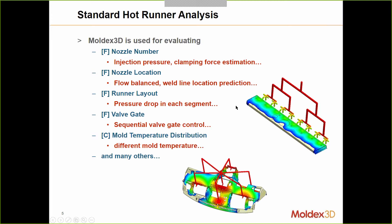So for standard Hot Runner analysis, several people have been using these in the past with success. What is Moldex 3D used for when it comes to analyzing your Hot Runner systems? You can analyze how many hot drops or nozzles are required, look at your injection pressure and tonnage estimations, nozzle locations, flow balancing, weld lines, runner layouts, pressure drops in each segment, valve gating, sequencing your valve gates, and your temperature distribution in the part, the runner, and the mold. You can visualize or analyze all of these with either a fill analysis or a fill and cool analysis.